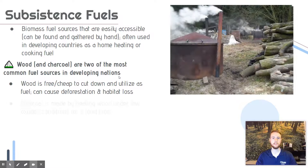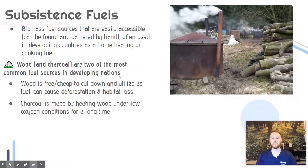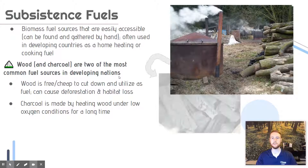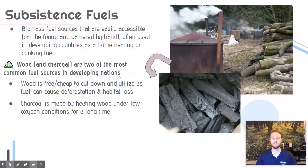Charcoal is another fuel source, and charcoal is actually made from wood. When you put wood in a fire or a stove apparatus and heat it or burn it for a long period of time under low oxygen conditions, you eventually create charcoal. Charcoal is really light, so it's easy to transport and easy to buy in bulk, making it a solid alternative as a subsistence or biomass fuel.